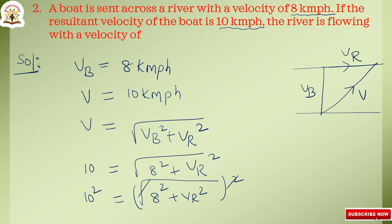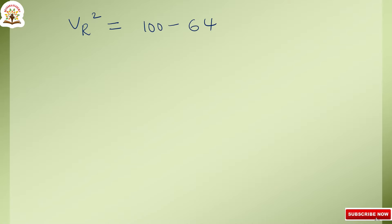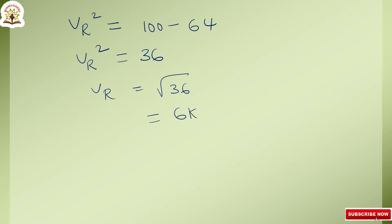So 100 equals 64 plus Vr squared. Therefore Vr squared equals 100 minus 64 equals 36. Vr equals root of 36, that is equals to 6 kilometer per hour. This is the final answer. Therefore Vr equals 6 kilometer per hour.